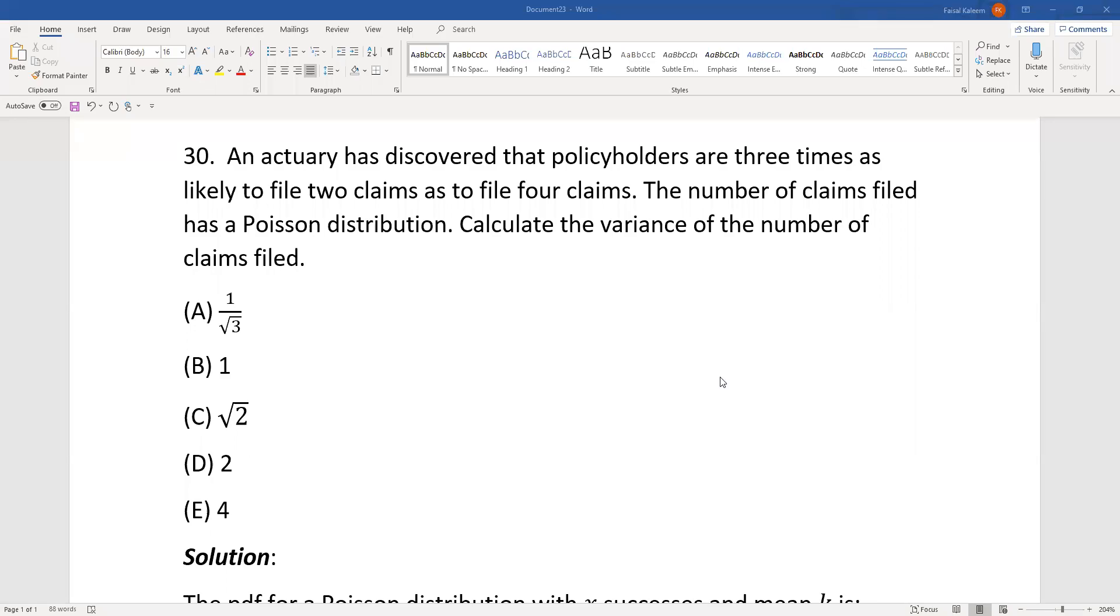An actuary has discovered that policyholders are three times as likely to file two claims as to file four claims. The number of claims filed has a Poisson distribution. Calculate the variance of the number of claims filed.